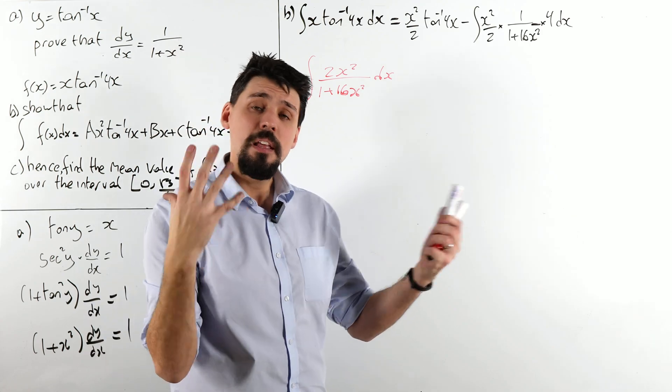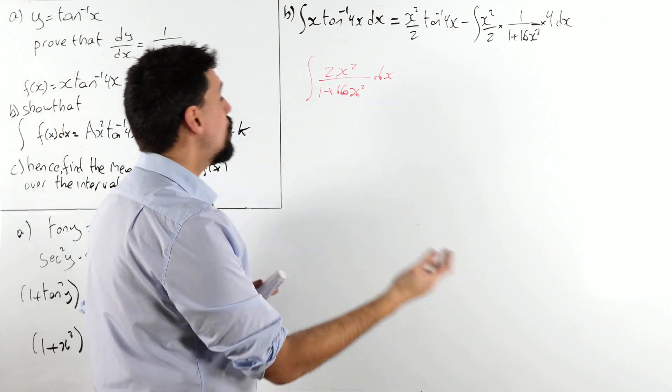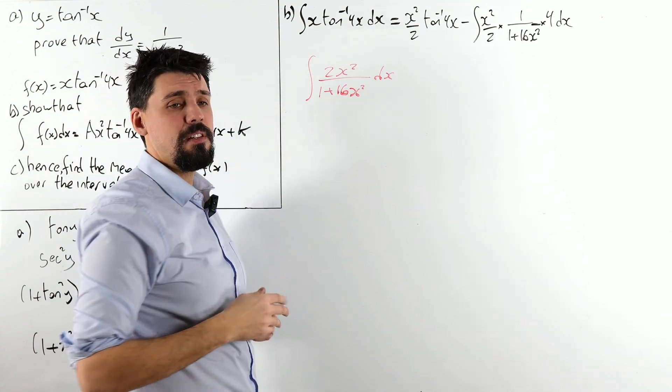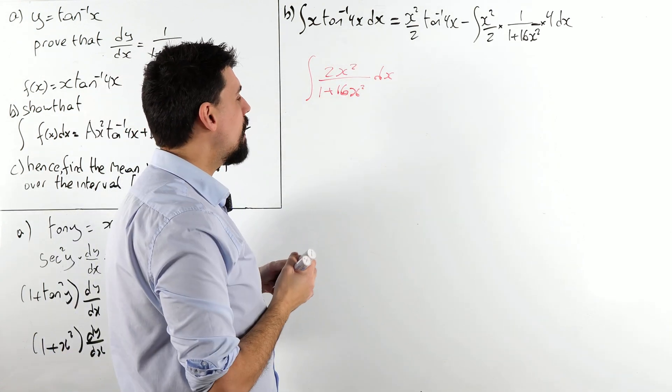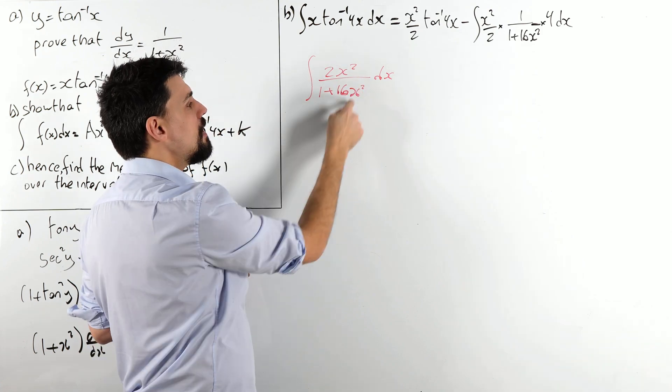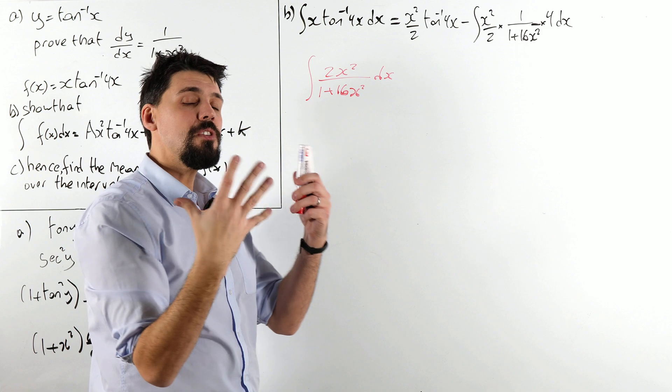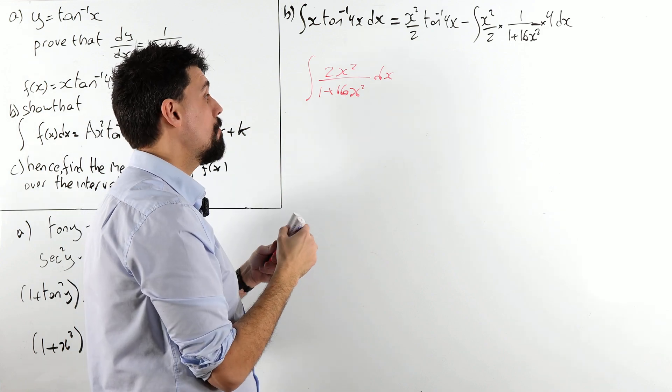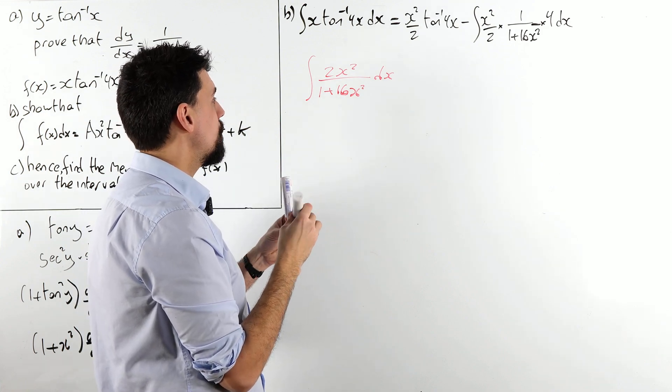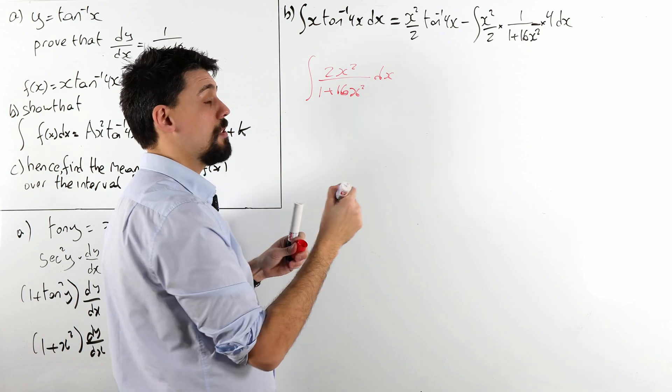However, there is a neat little trick for this. There's multiple different ways to do it. You could go through the entire polynomial division. I'm going to be a little bit more sneaky. The top is roughly the same, got the same elements as the bottom. So, I'm going to try and make them the same. I'm going to multiply the top and the bottom by 8.